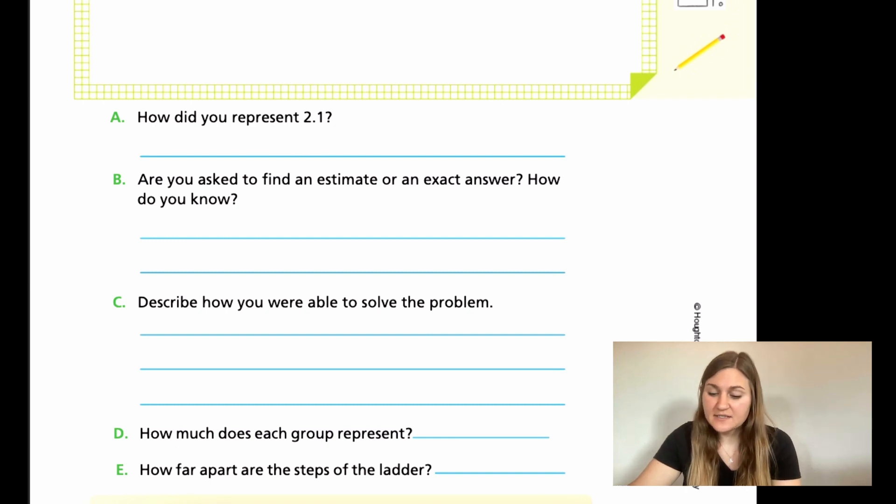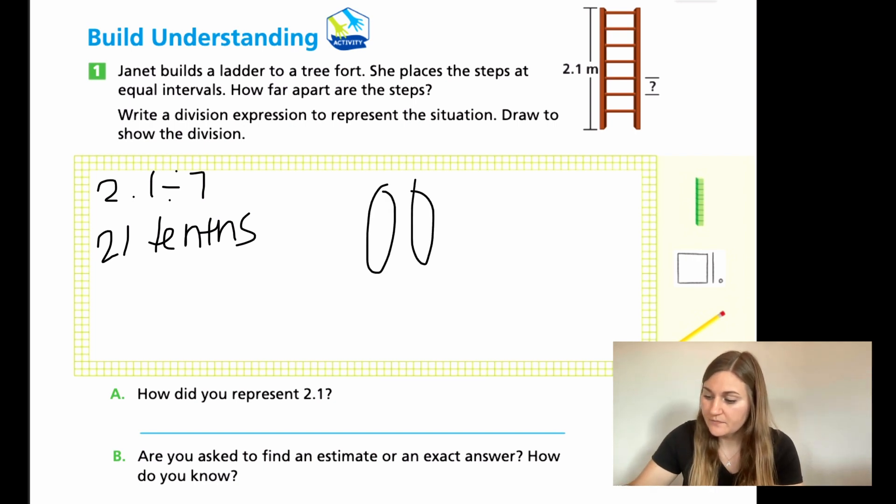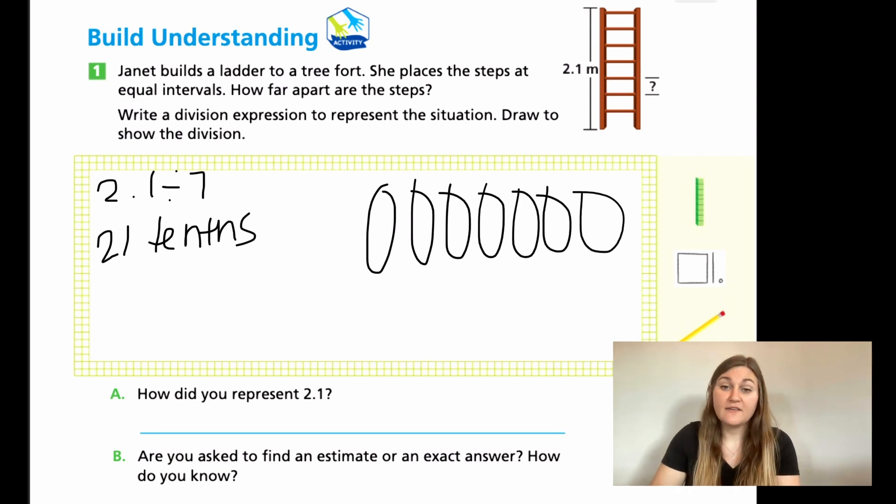Let's go ahead and solve this. So if I had 2.1, I'm going to go ahead and make that as if I had 21 tenths. Then I know that if I had seven equal groups, I know that if I have 21 and I'm dividing by seven, that's going to be three. So I'm going to put three equal parts.